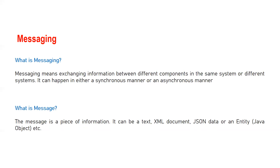The application sending the message and the application receiving the message could be on the same computer or on different systems — for example, different business partners using different applications. Messaging can happen in either a synchronous or an asynchronous manner.